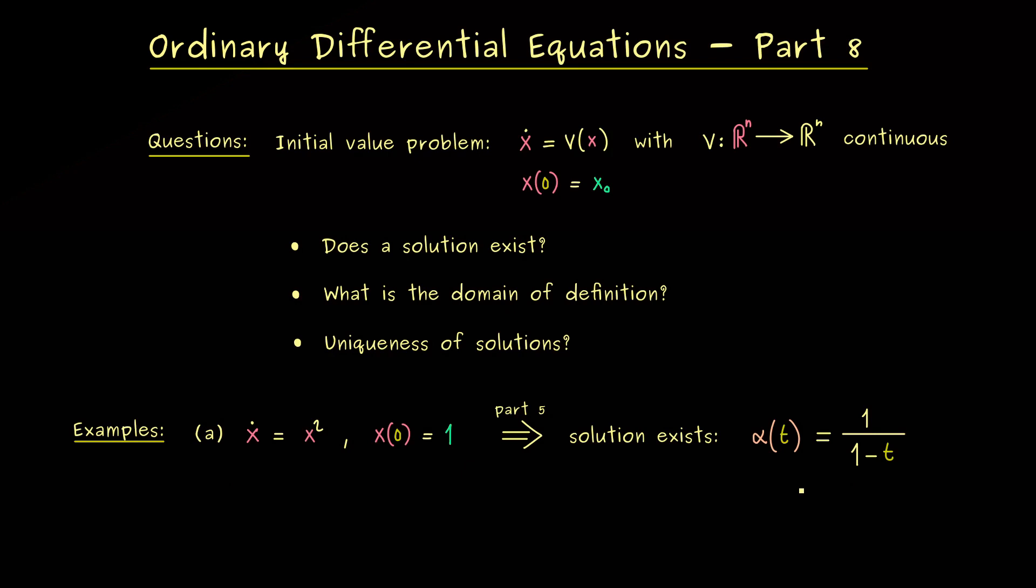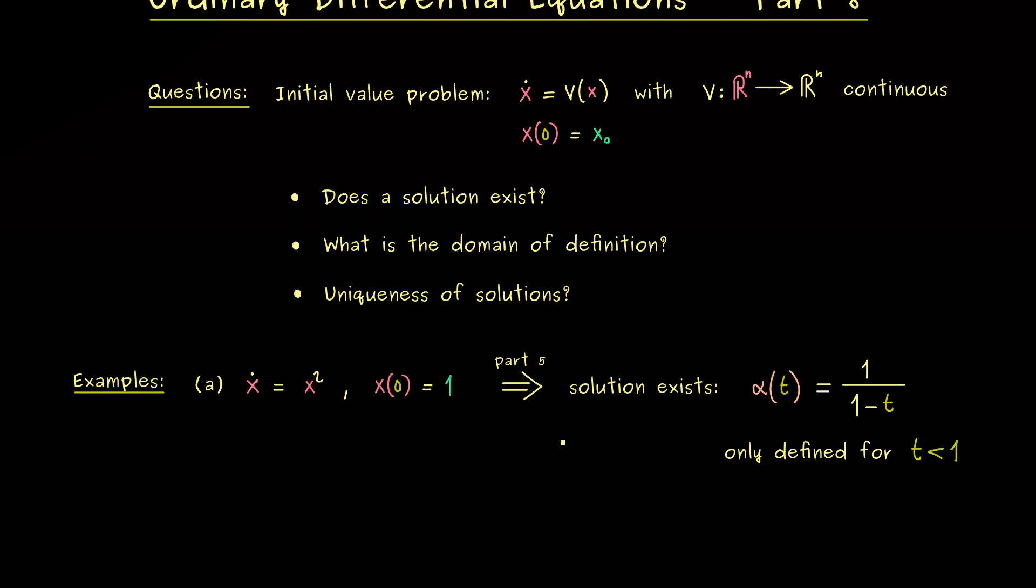However, what I want to point out here is that this solution is not defined on the whole real number line. Indeed, with our initial value t equals 0 in mind, we can conclude that this solution is only defined for t less than 1. Therefore, the maximal domain of definition we can choose for this solution here is not the whole real number line. So this is definitely something that can happen and something we have to keep in mind.